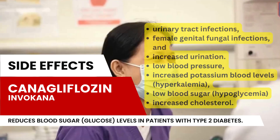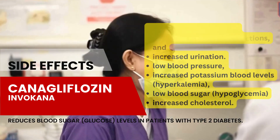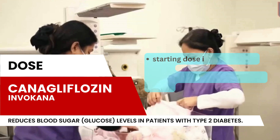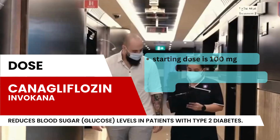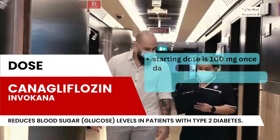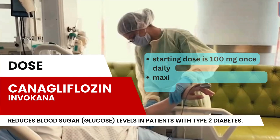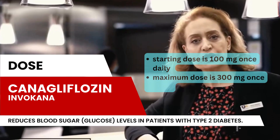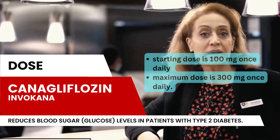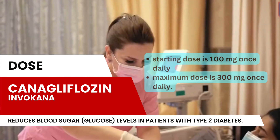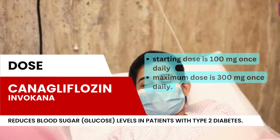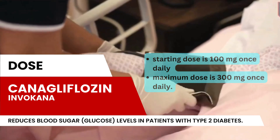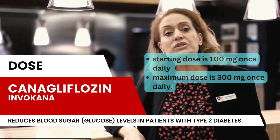Canagliflozin should be taken before the first meal of the day. The recommended starting dose is 100 mg once daily and the maximum dose is 300 mg once daily. Renal function should be assessed prior to starting canagliflozin and periodically during treatment, and the dose should be modified based on renal function.